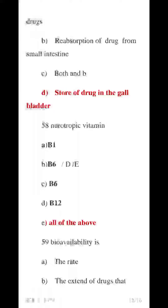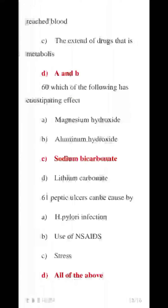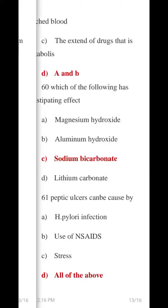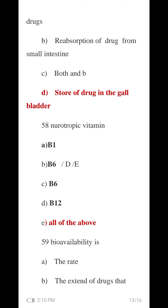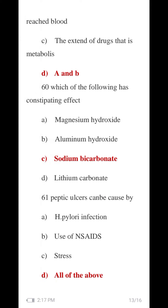Question 59 MCQ: Bioavailability — the rate and the extent of the drug that reaches the blood. The E number option relates to rate, and B number option to extent. The correct option is both A and B — both rate and extent of drug reaching systemic circulation.